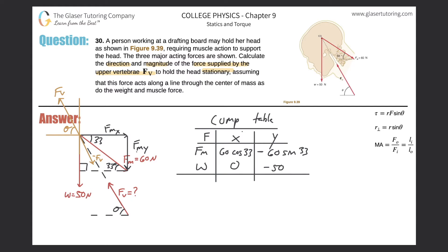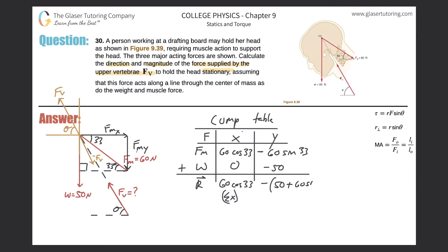For the weight vector, the x-component is zero, and the y-component is −50 N (negative because it points down). Summing all x-values gives: 60 cos(33°). Summing all y-values gives: −(50 + 60 sin(33°)). To find the overall resultant magnitude, we use: √[(Σx)² + (Σy)²].